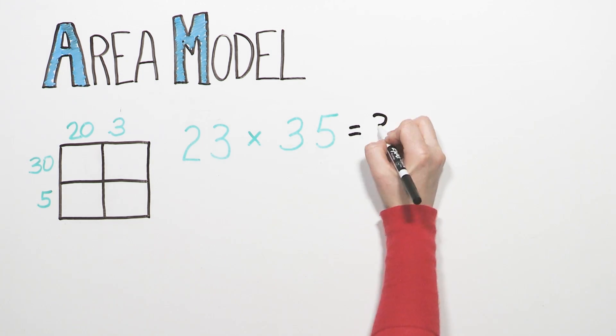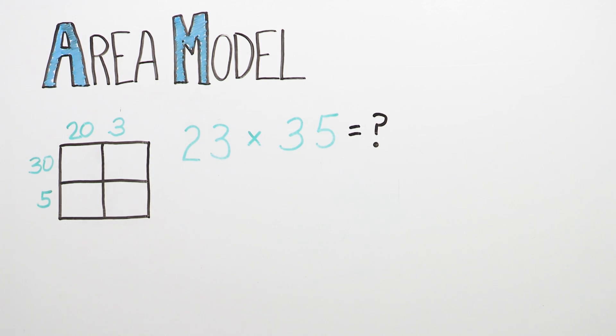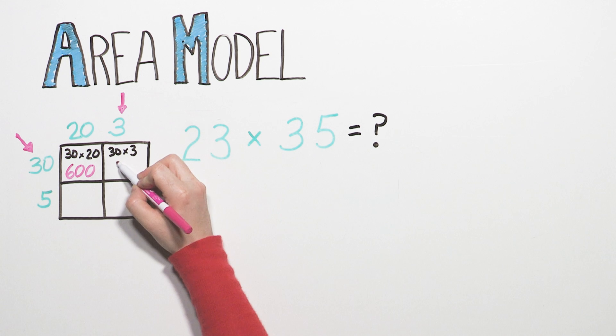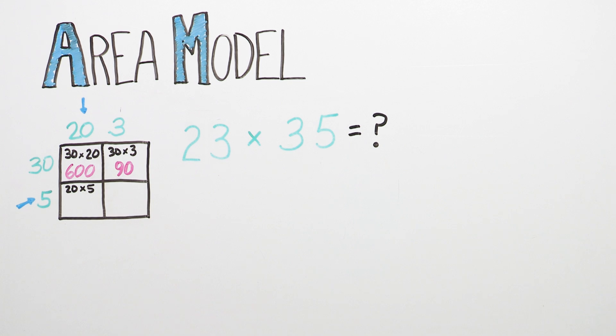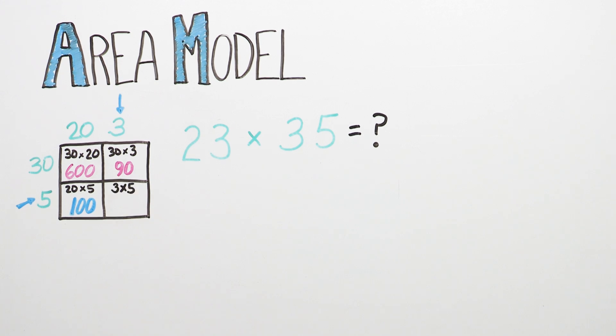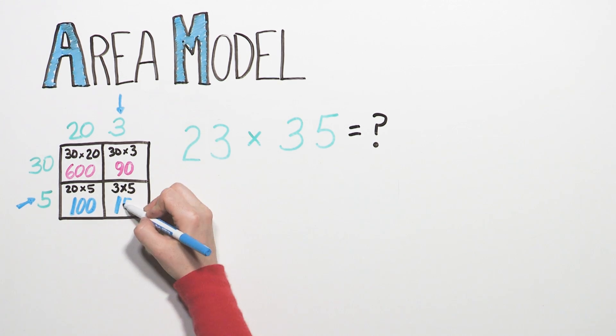So what is 23 times 35? 3 tens times 2 tens equals 60 tens or 600. 3 tens times 3 equals 9 tens or 90. 2 tens times 5 equals 10 tens or 100. And 3 times 5 equals 15.